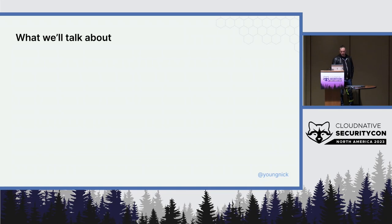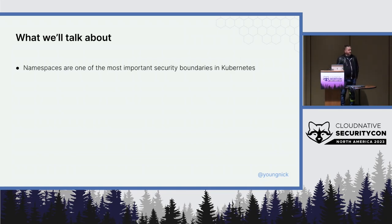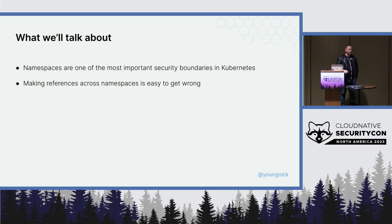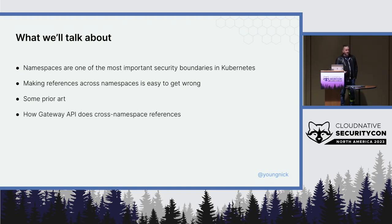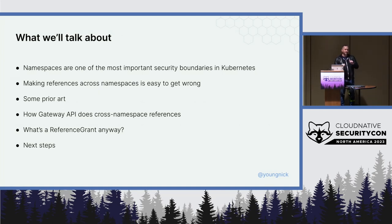Here's what we'll talk about today. Namespaces are one of the most important security boundaries in Kubernetes. Making references across namespaces is actually really easy to get wrong — very easy to do in a not great way. There is a little bit of prior art here before reference grant, and then this is how we do it in Gateway API, including reference grant and what it is. There's been a lot of developments in next steps for reference grant — I had to literally update this three times this week because there's been some stuff that happened.